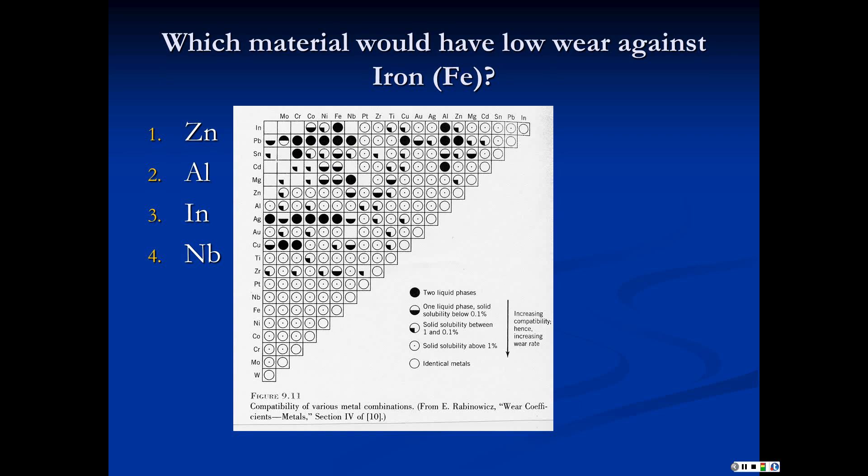Which material would have low wear against iron? Pause the video for a second and see if you can figure out which one it is. If we look against iron, you find iron here on this column. Zinc is right here, so that one's not good. Aluminum's here, that one's also not good. Indium's up here, and that's a black circle. Niobium down here is also not good. Obviously, indium is the answer because they're two liquid phases. Indium, unfortunately, is fairly expensive. It's a cousin of lead but more pricey. That's how we deal with adhesive wear - we try to use incompatible metals.